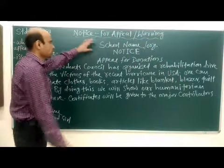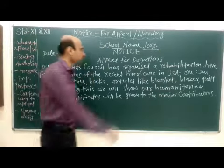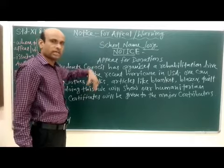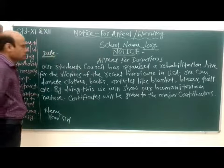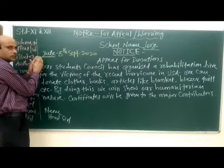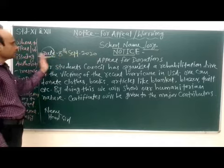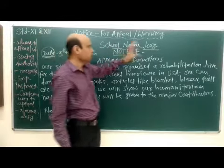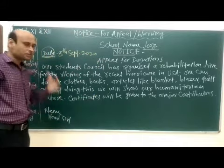The format is the same. First, you write the school name or the organization name at the top of the page. Next comes the word NOTICE. After the school or organization name, leave one line space, then write NOTICE, then one more line space. After NOTICE, on the left side, mention the date — for example, 1st September 2020. On the next line, centered, write your heading or title — for example, 'Appeal for Donations.' Up to this point we have our heading, and then we move into the main content body.